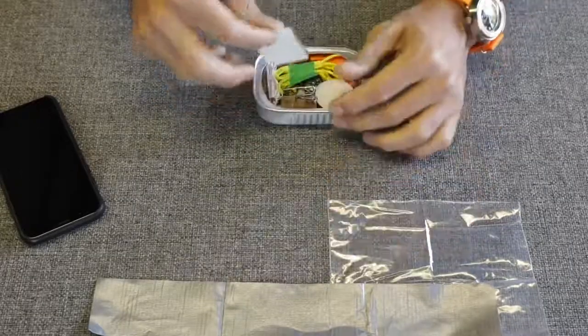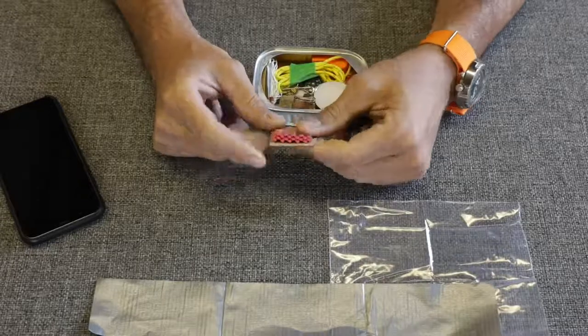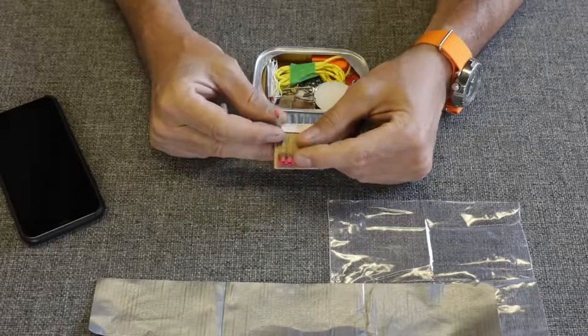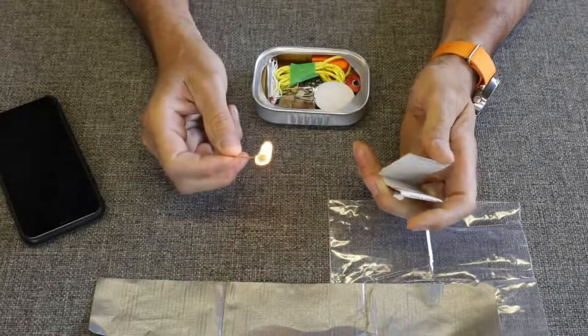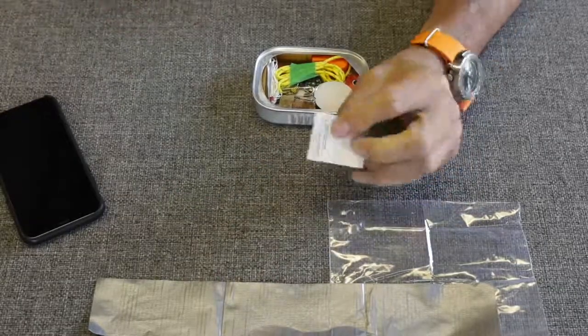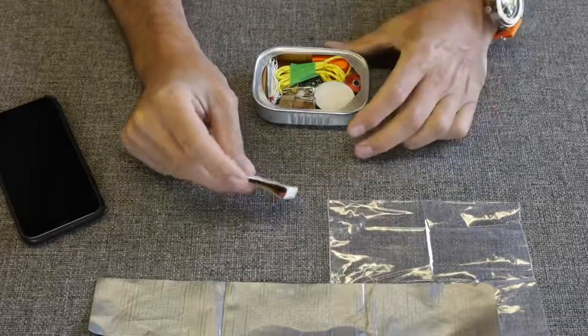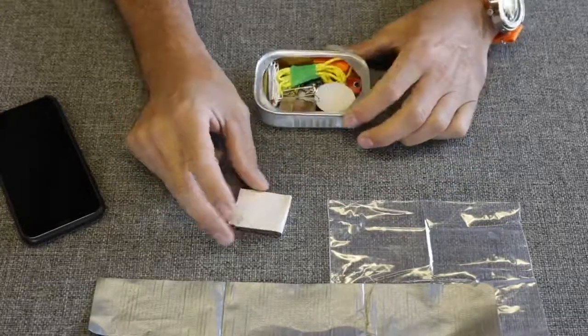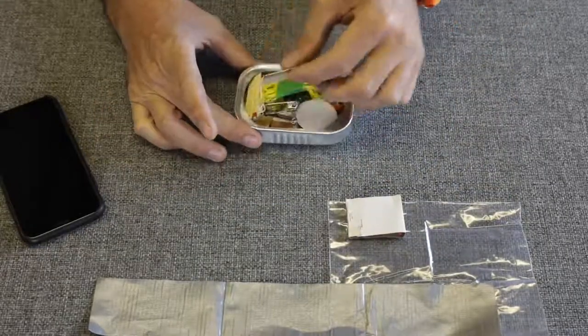Next we have paper matches, just your standard paper matches. Maybe wooden matches would be a better option. These are a little bit fragile when it comes to moist areas, but that's better than none. I think that's probably a good option. I don't know that you would even get the wooden matches inside of one of these containers. It's very small. This is actually pretty cool kit.